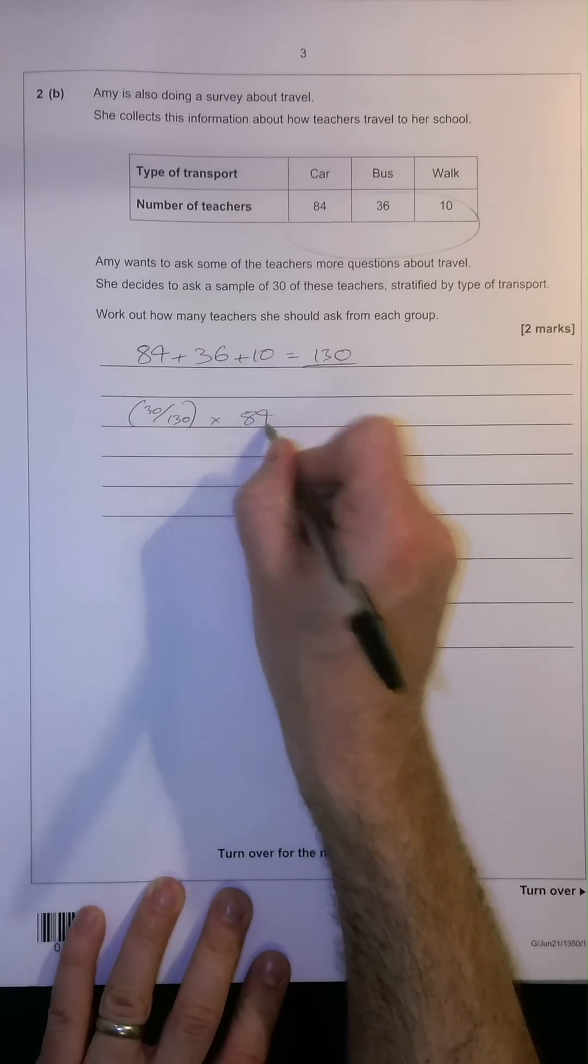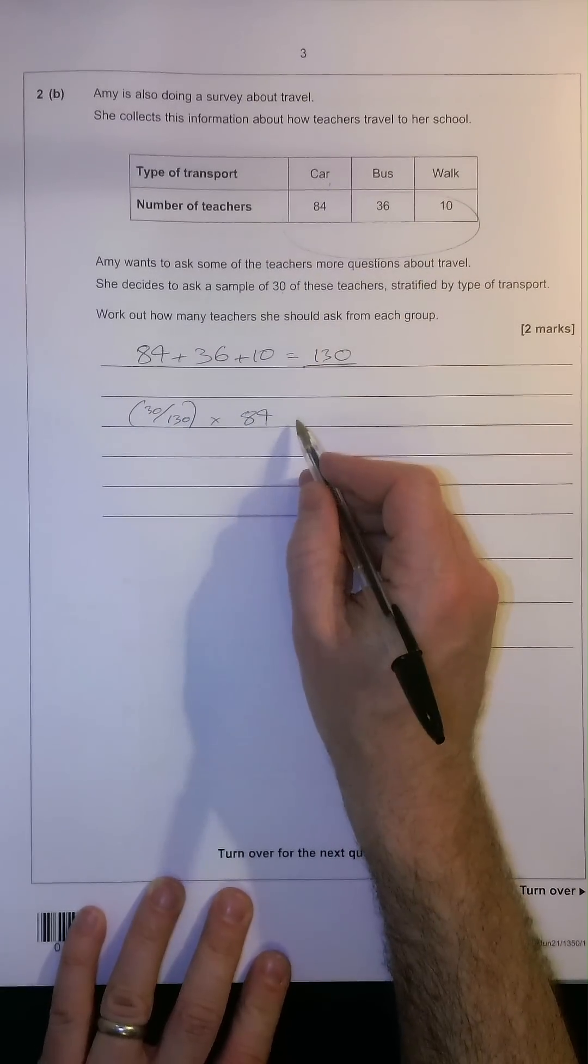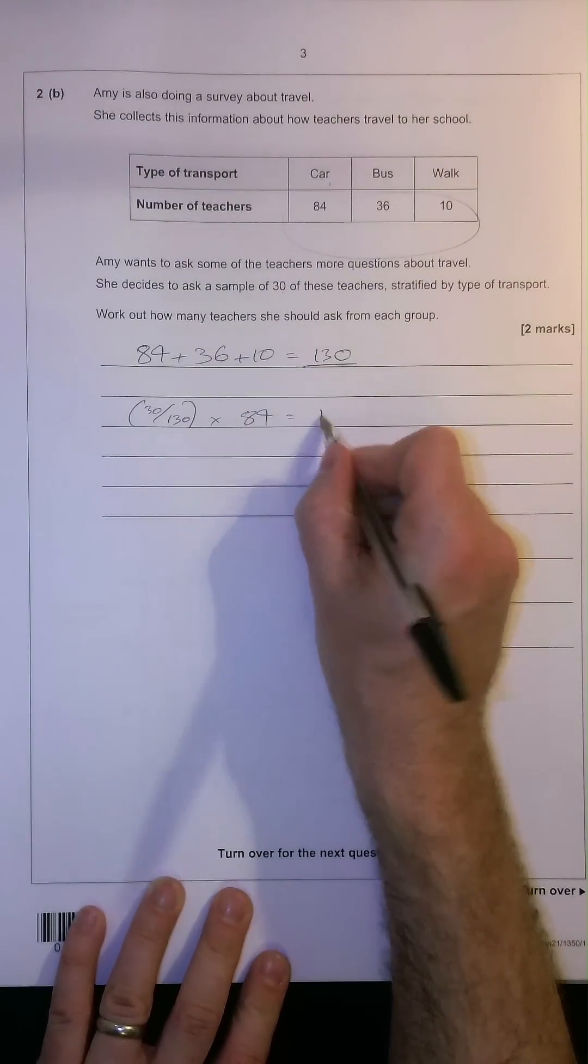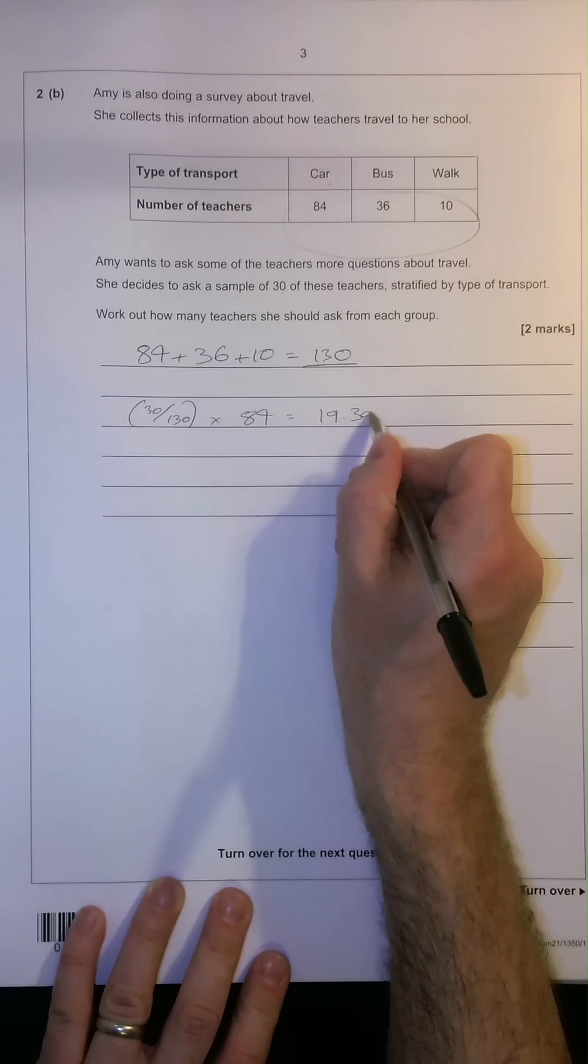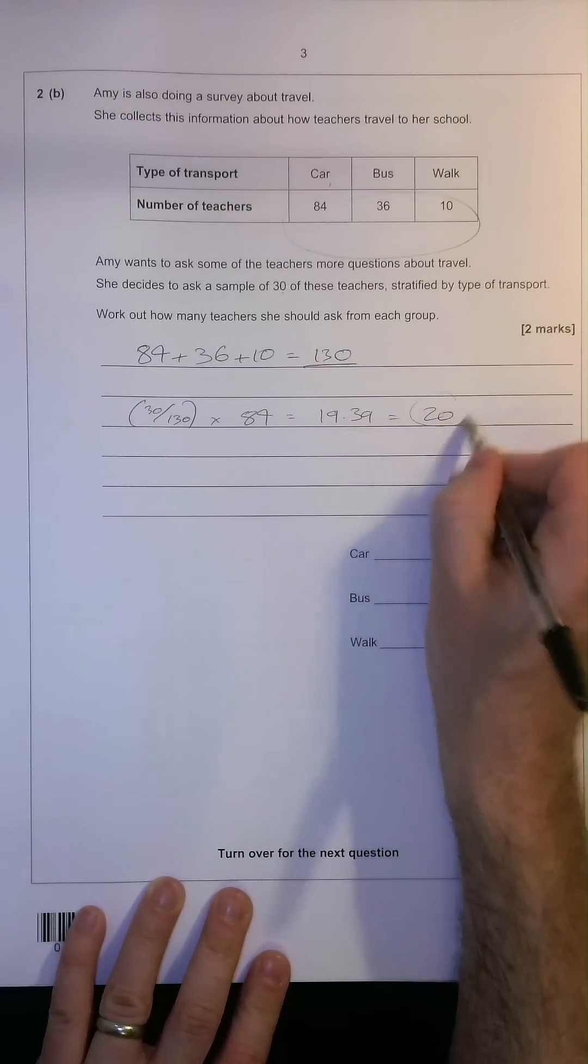times by 84. This is the number of people who drive cars into work. And that will give us an answer of 19.39. We can round that up to 20 people.